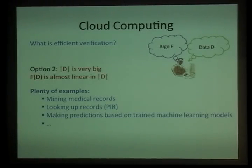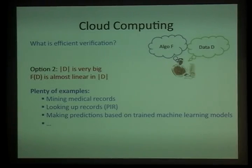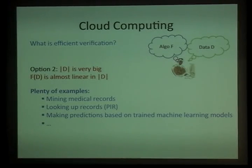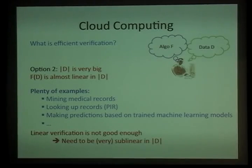The second scenario — which is the one we're concerned with — is where the data itself is too big for the user to store. The function evaluated is potentially very simple, perhaps linear or almost linear, but the complexity comes from running it on a very long sequence of data, which takes too much time and potentially too much storage. This has many applications in practice: regression models, private information retrieval, and so on. Here, linear verification is not enough because it would take as much time as evaluating the function. The verification time needs to be significantly less than linear in the description of the data itself.